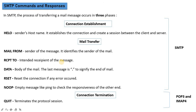The HELO command tells the system which host is sending the mail — it identifies the sender and is the request for connection establishment. This establishes a connection between the client and server, and a session starts from here.